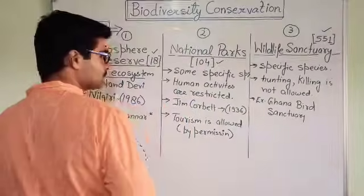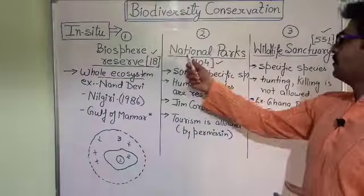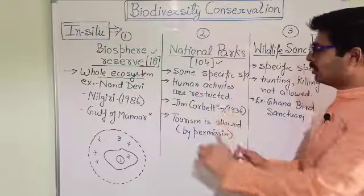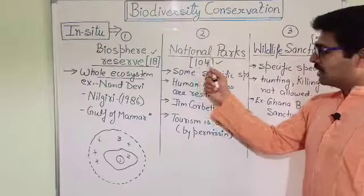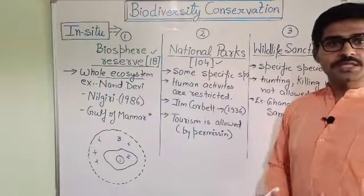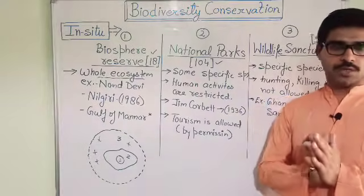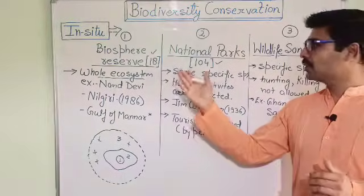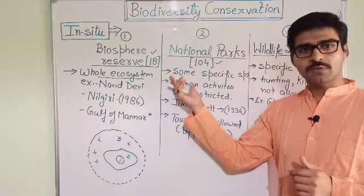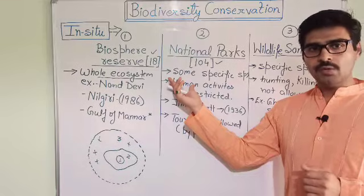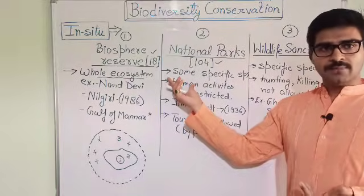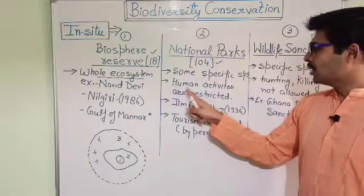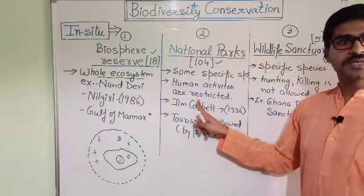Now the second concept is national parks. In India we have 104 national parks. Here our target is to protect some specific species only — for example tiger, rhino, elephant, or lion. Human activities are totally restricted in national parks. In biosphere reserves human activities are allowed, but in a national park no human activity is allowed.